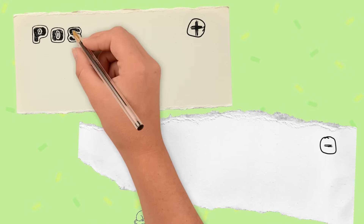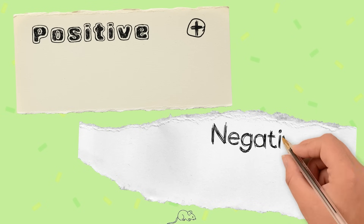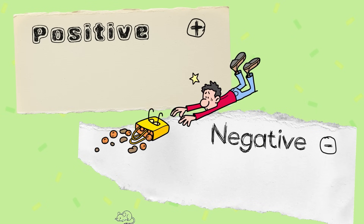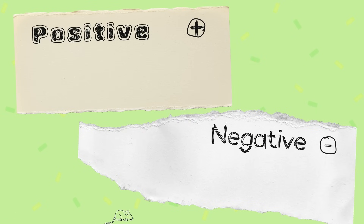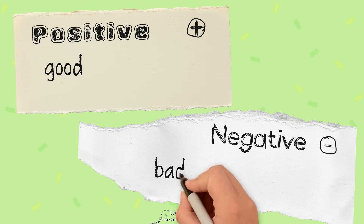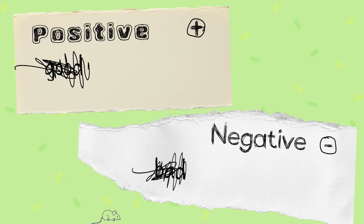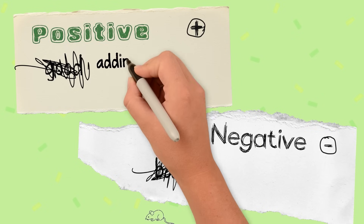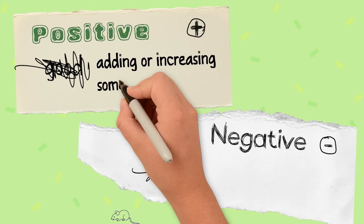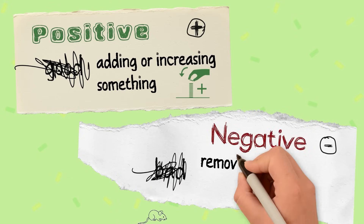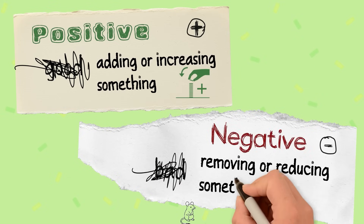Next, let's differentiate between positive and negative — the part that often trips people up. Ironically, you've probably been conditioned to think positive means good and negative means bad. But here, it's not about good or bad at all. Instead, positive simply means you're adding or increasing something, and negative means you're removing or reducing something.